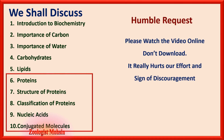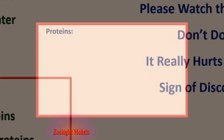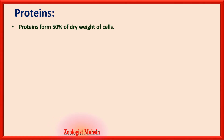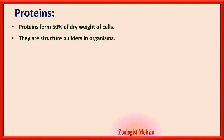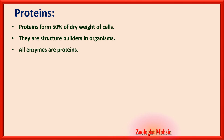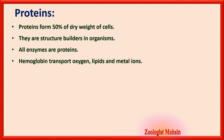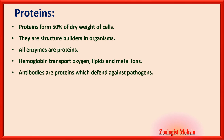It is a humble request to all of you: please watch videos online and do not download them — it is a matter of huge discouragement for us and our efforts. Thanks. Proteins form 50 percent of the dry weight of cells, meaning if you remove all the water from a cell, the remaining dry weight is 50 percent proteins. They are structure builders in organisms; all enzymes are proteins. Hemoglobin not only transports oxygen but also lipids and metal ions. Antibodies are proteins which defend against pathogens in the body.